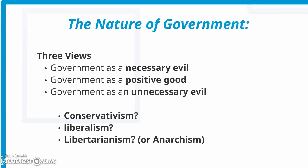There are three predominant views of government — the role of government. One is that government is a necessary evil: we need government, but as little as possible, just enough to ensure those five functions. Another predominant view is government is a positive good — that government is a good thing for human society and we need more of it. The last one is that government is an unnecessary evil; we'd be better off to abolish government and do without it. These go with three kinds of ideologies: conservatism, liberalism, and libertarianism, or a more extreme form would be anarchism.